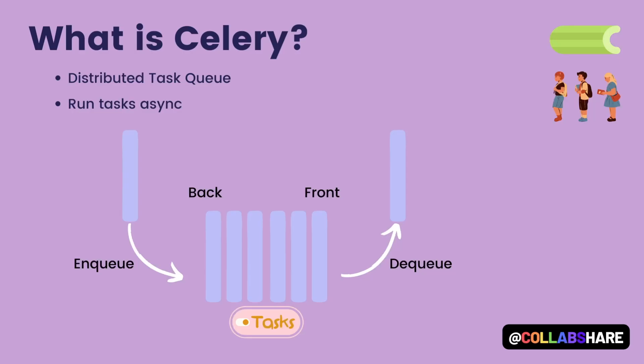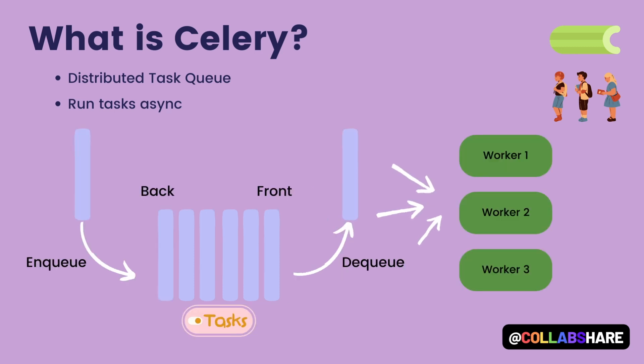What is Celery? Celery is a distributed task queue that allows you to run background tasks asynchronously in your application. It's particularly useful for tasks that are time-consuming or resource-intensive, such as sending emails, processing large datasets, or generating reports. By offloading these tasks to background workers, Celery can help improve the performance and scalability of your Python application, freeing up server resources to handle other requests.